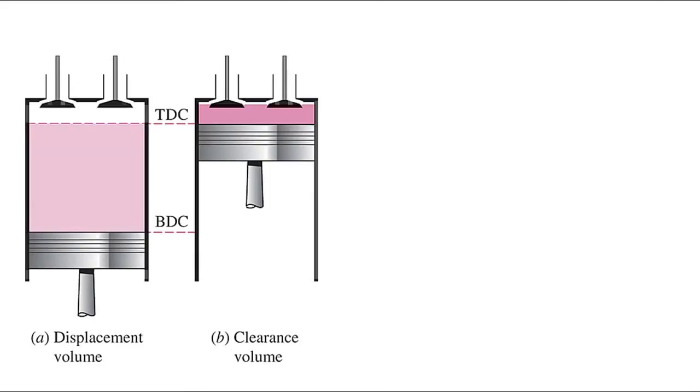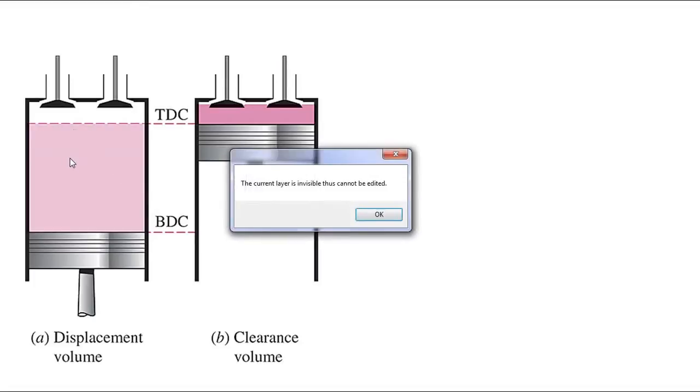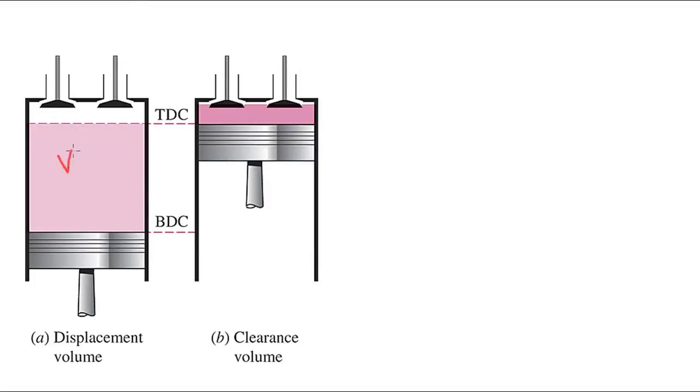Here's showing the volumes inside the cylinder. So we have a couple definitions here. The displacement volume is the volume that is displaced as the piston moves from BDC to the top dead center. The clearance volume is the volume left inside the cylinder when the piston is all the way up at TDC.